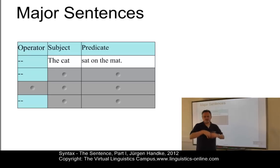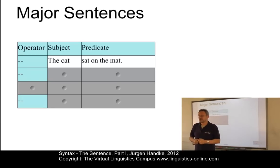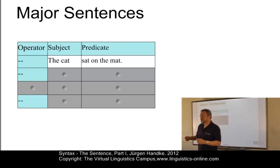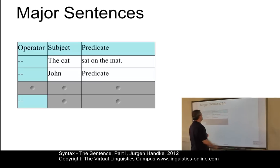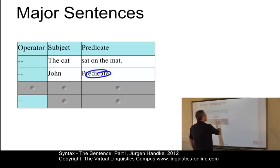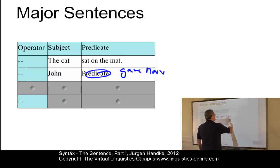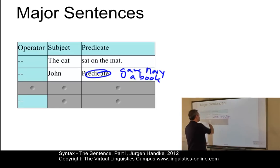You can easily move these things around in questions like "did the cat sit on the mat?", or substitute elements: "the dog sat on the mat," "a dog sat on the mat," "a tiger sat on the carpet," and so on. Here is another example: "John gave Mary a book" — again we have a subject and a predicate.